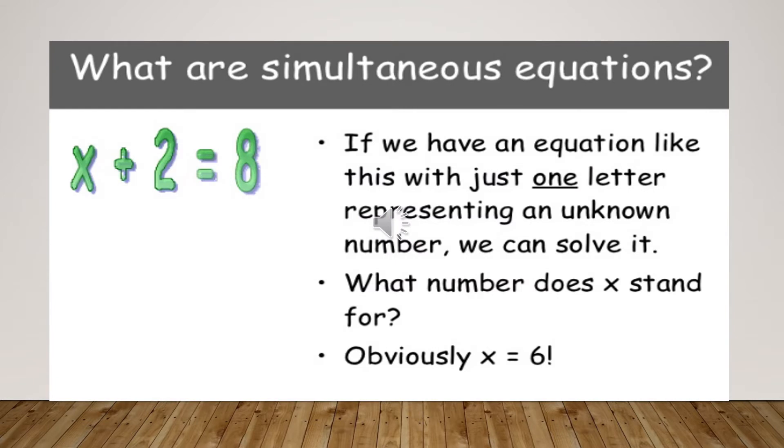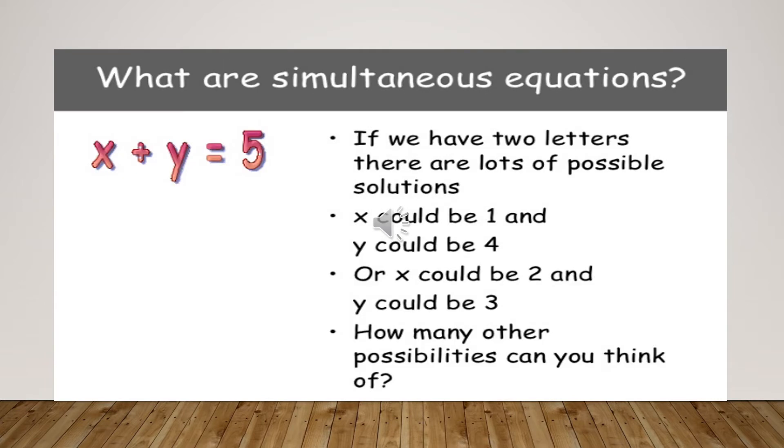Now, what are the simultaneous equations? Here you can see that an equation is here, x plus 2 equals to 8. If we have an equation like this with just one letter representing an unknown number, we can solve it. What number does x stand for? You can see that x plus 2 equals to 8. If I am going to shift this 2 to the right hand side, it will become negative. It means x is equal to 8 minus 2 and x is equal to 6.